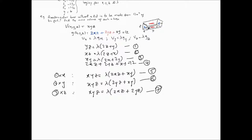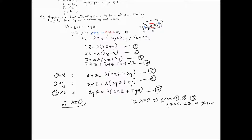One important thing: lambda cannot be 0. If lambda were 0, then from equations 1, 2, and 3 we'd get yz = 0, xz = 0, and xy = 0, which means x, y, and z are all 0. That gives us nothing useful, so lambda cannot be 0.